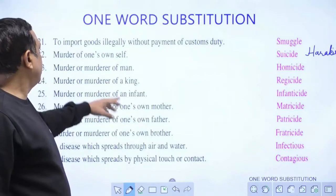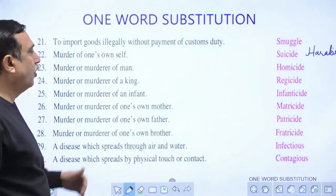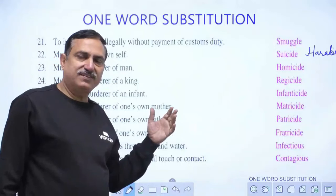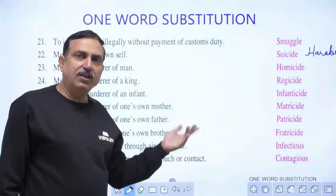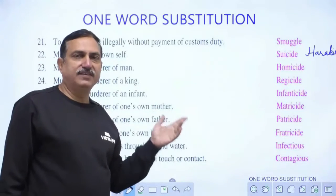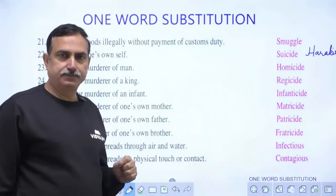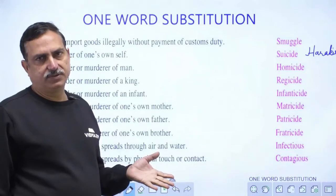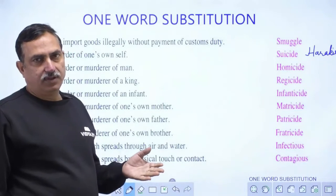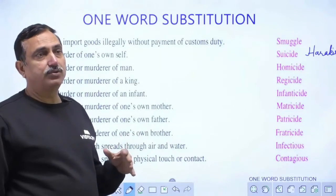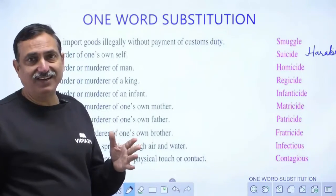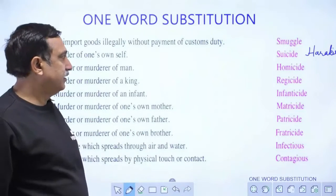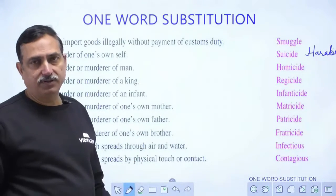Murder of a man is called homicide. 'Homo' means human, so killing of a human is homicide. This refers to when people are killed by other people, not in accidents.